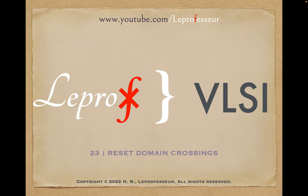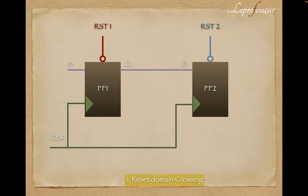We're going to be discussing reset domain crossings. Many of you have requested this topic. Here is one scenario for reset domain crossings. As you can see, you have a flop, let's say flop one, which is passing the signal to flop two. Very simple scenario here. Both of the flops are getting